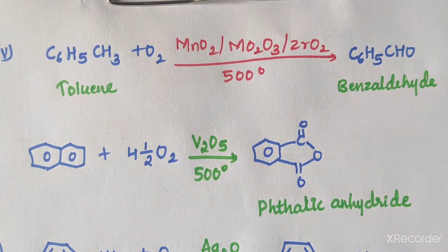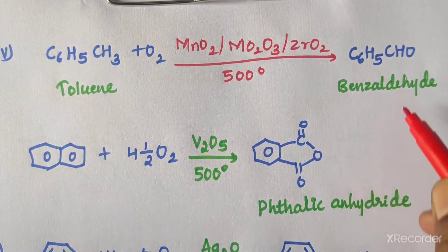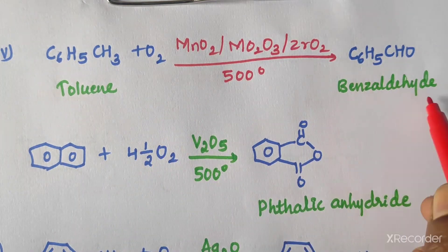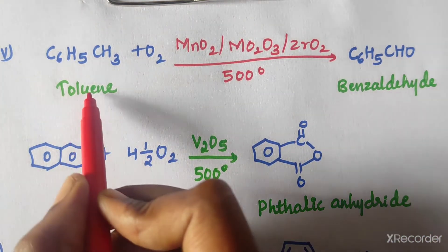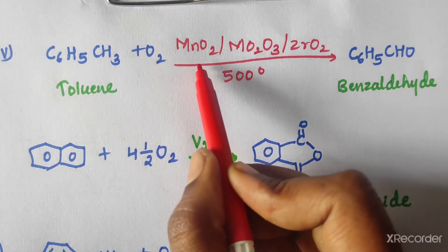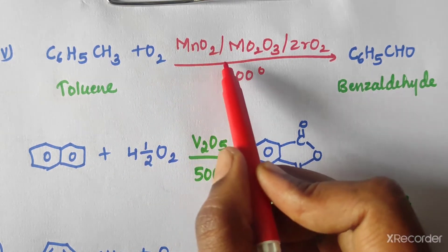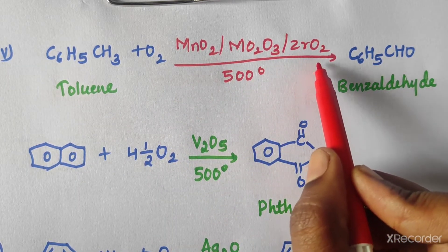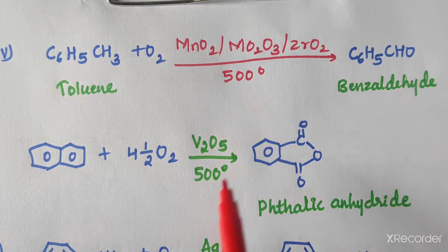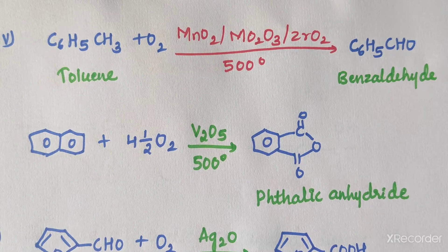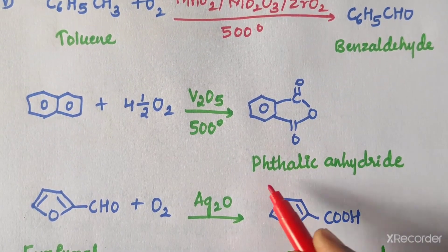The next preparation is benzaldehyde, which can be obtained from toluene on oxidation in the presence of MnO₂, molybdenum trioxide, and zirconium oxide at 500 degrees centigrade temperature. This is one of the industrial methods.